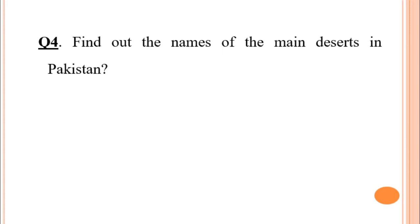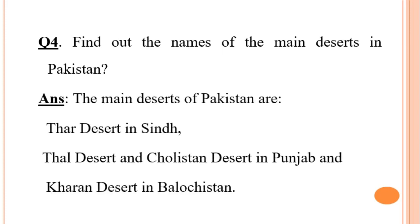Question number four: find out the names of the main deserts in Pakistan. The main deserts of Pakistan are the Thar Desert in Sindh, the Thal Desert and Cholistan Desert in Punjab, and the Kharan Desert in Balochistan.